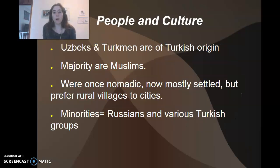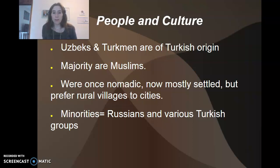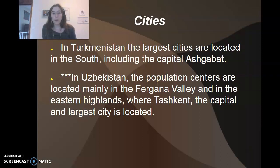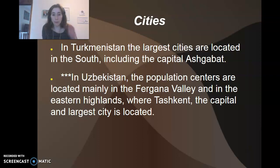The Uzbeks and the Turkmen are of Turkish origin, but the majority of the people are Muslims. They were once nomadic but are mostly settled now, and most prefer rural villages to cities. The minorities are Russians and various Turkish groups. In Turkmenistan the largest cities are located in the south, including the capital Ashgabat. In Uzbekistan, population centers are mainly located in the Fergana Valley and in the eastern highlands, where Tashkent, the capital and largest city, is located.